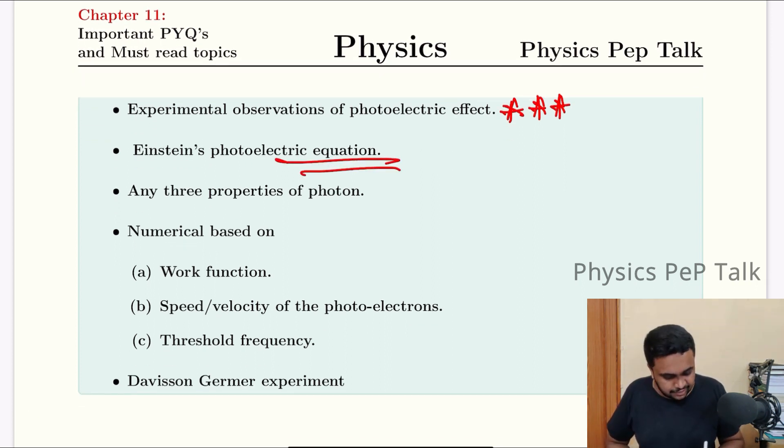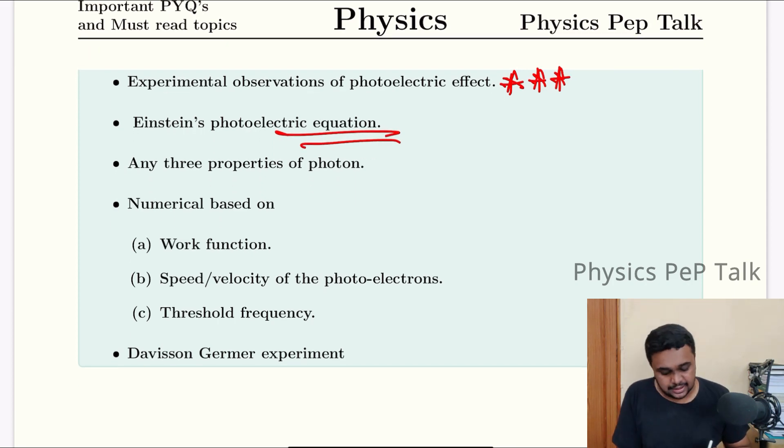Types of electron emission, experimental observation - this is most important, this cannot be missed. Photoelectric equation is important. Kinetic energy in terms of electron volt, what is work function. Any three properties of photon - probability of 2 to 3 marks.